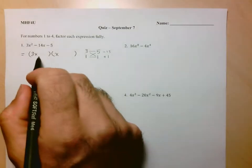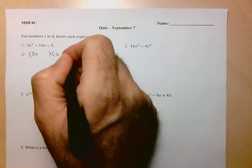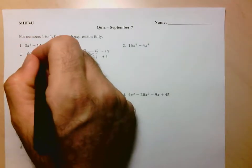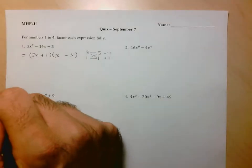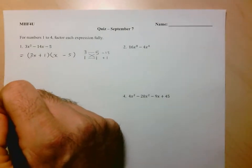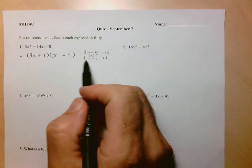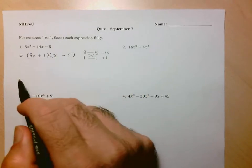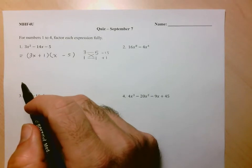That combination will help us get the negative 14. So we need negative 15 plus 1. So that means I'm going to do 3 times negative 5, and x times positive 1. And there's my factorization.